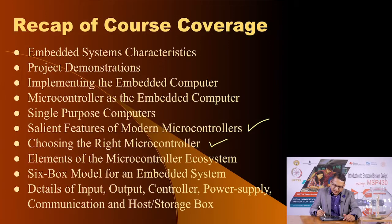After that, we looked at the ecosystem elements of microcontrollers. A microcontroller requires four essential elements: power supply, reset, clock, and the ability to download the program from your development host into the memory of the microcontroller. Once done with this, we tried to visualize an embedded system using a six-box model. In this model, we looked at the input boxes — sensors and human input devices — and the controller box.